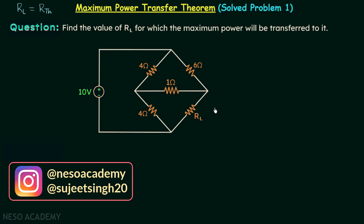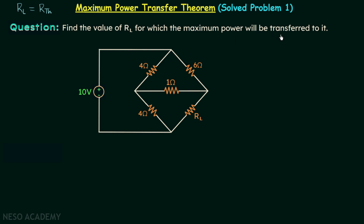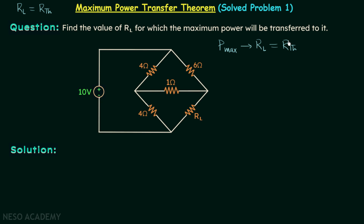In this problem we are required to find the value of RL, the load resistance, for which the maximum power will be transferred to it. We know the maximum power will be transferred to the load resistance when the load resistance is equal to the Thevenin's equivalent resistance of the network. So to find out the value of RL for which power is maximum, we will find out RTH of this network. Once we have RTH we will have our answer.